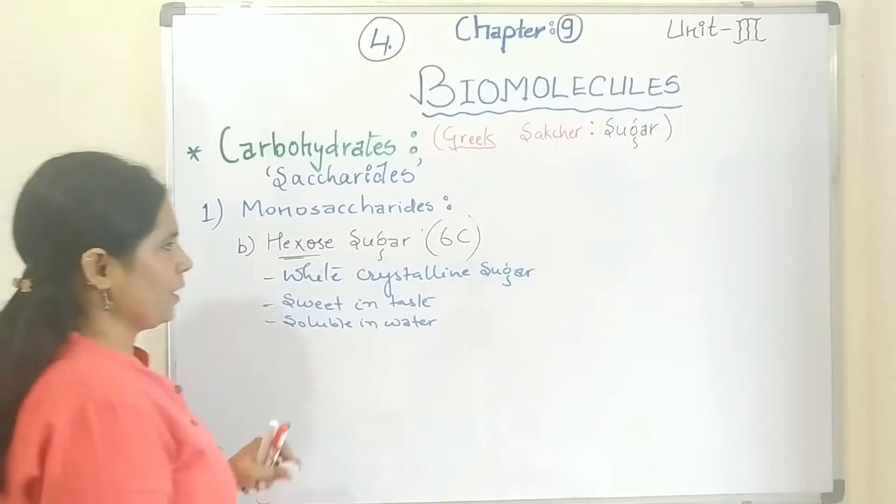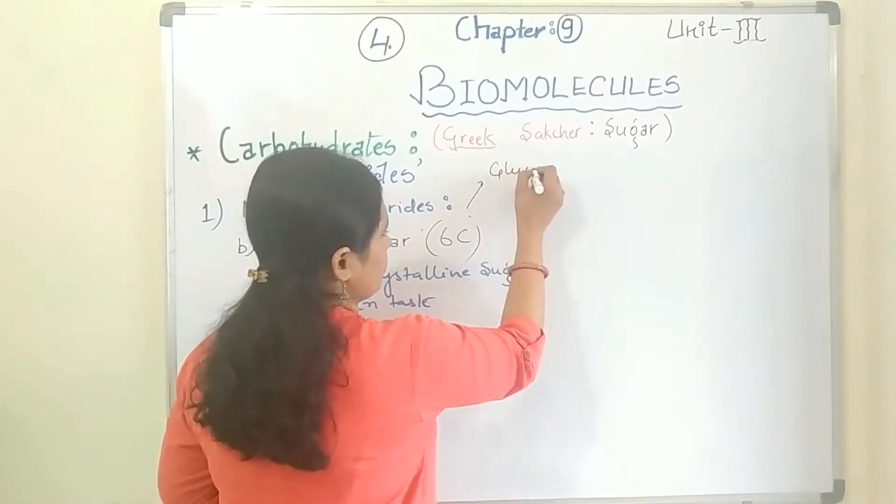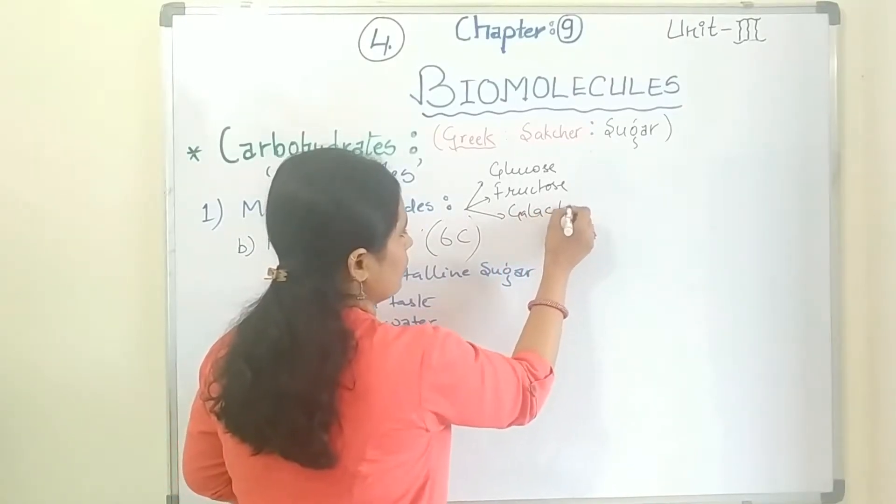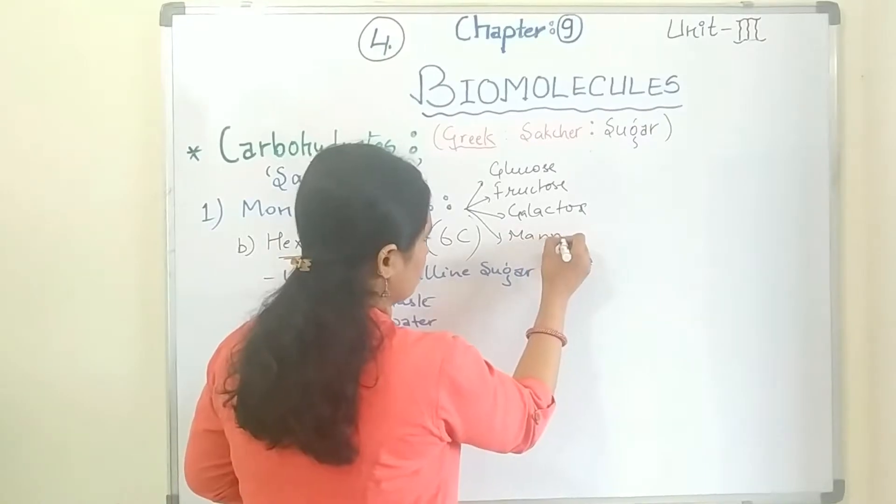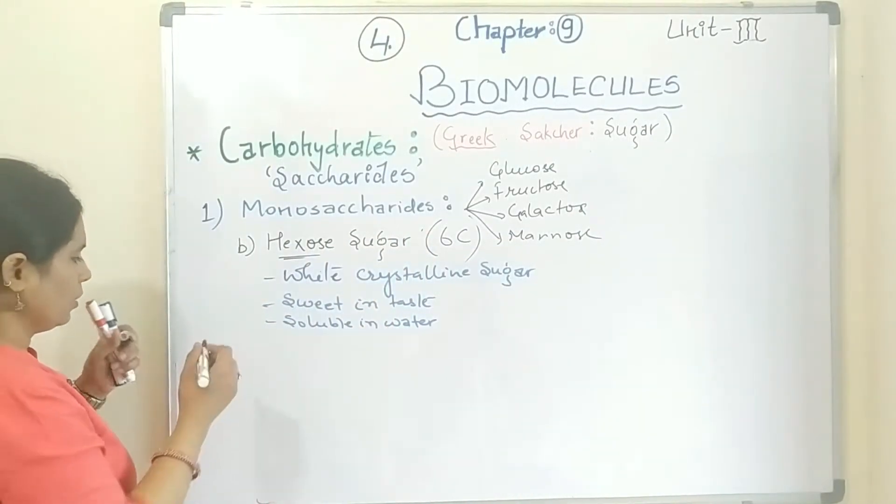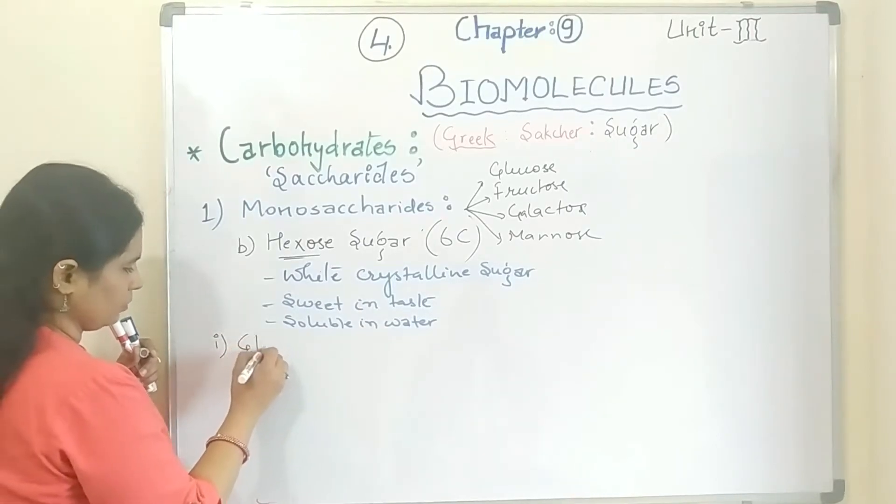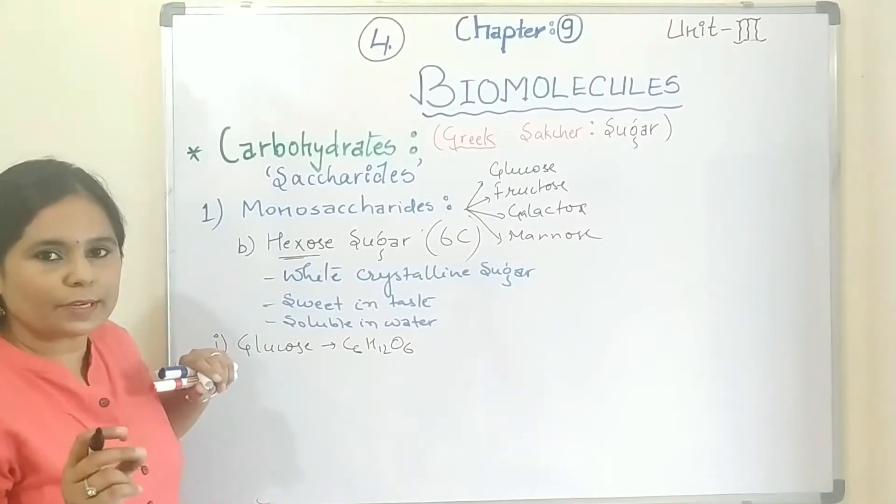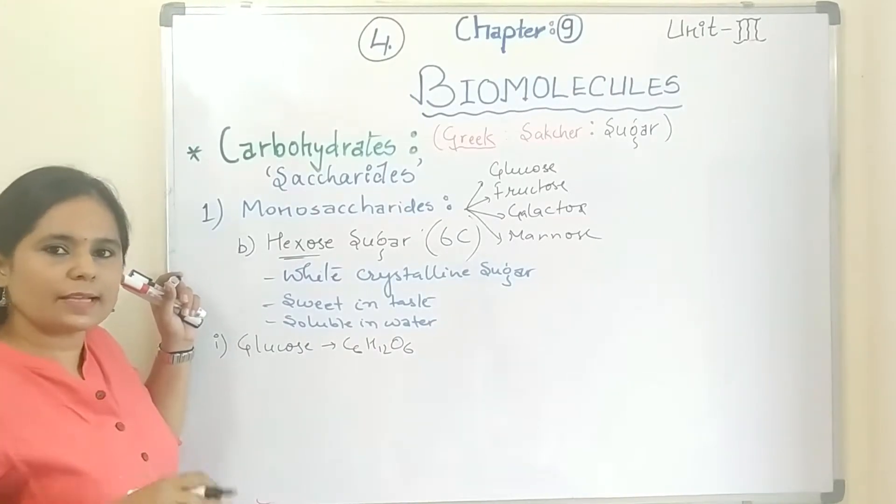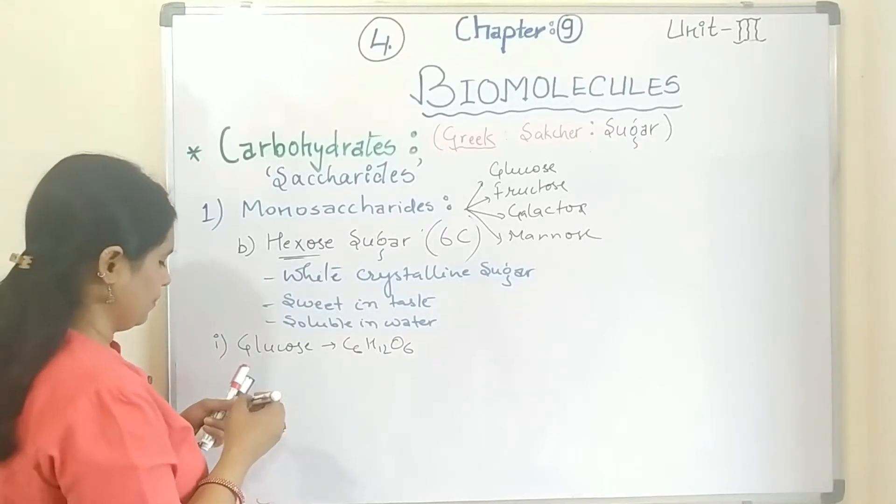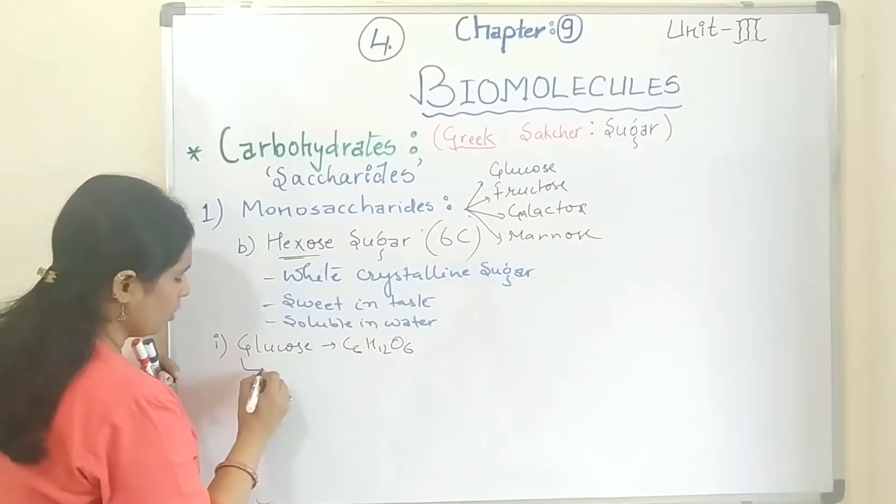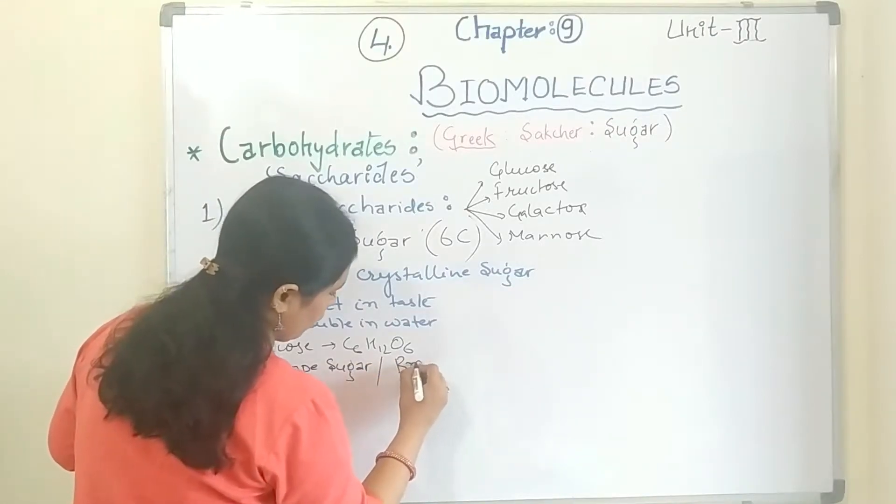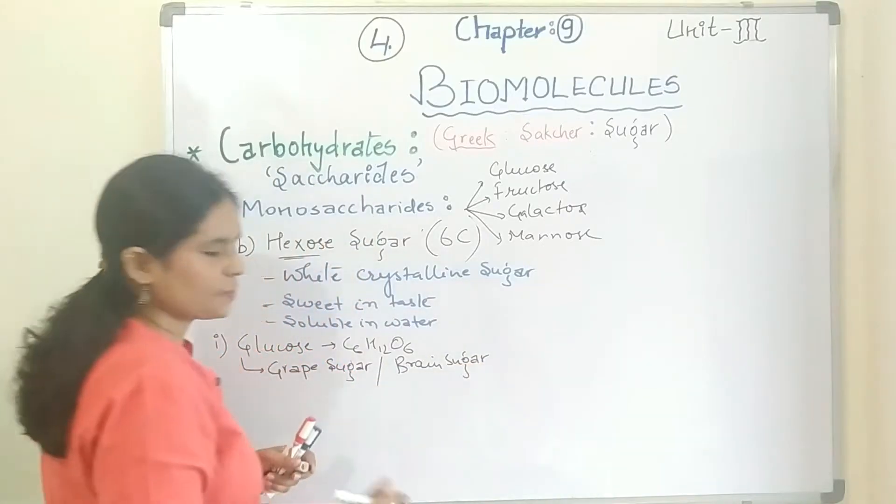Examples include glucose, fructose, galactose, and mannose. First we are going to discuss glucose. It is C6H12O6, the most important sugar in nature. It oxidizes and provides energy in the form of ATP. Glucose is also called grape sugar or brain sugar. These names you should remember because this question can be asked.